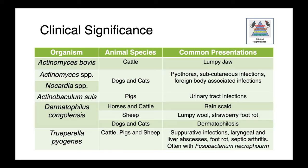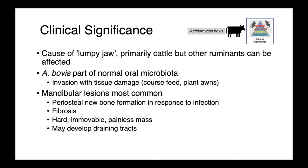The first disease we're going to talk about is lumpy jaw, caused by Actinomyces bovis. This is primarily seen in cattle, but other ruminants can also be affected. A. bovis is part of the normal oral microbiota, so we see disease when there's some sort of damage to host tissues — coarse feed, plant awns, spiky bits that cattle chew on and cause trauma to the inside of the mouth. Mandibular lesions are most common, and what we see is a really pronounced formation of periosteal new bone in response to infection — large proliferative bony lesions, fibrosis, hard, immovable, painless masses, and the development of draining tracts.